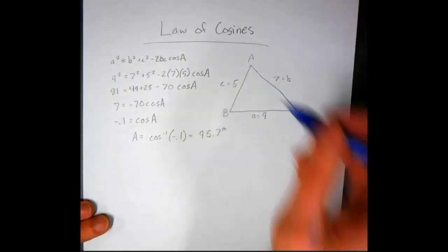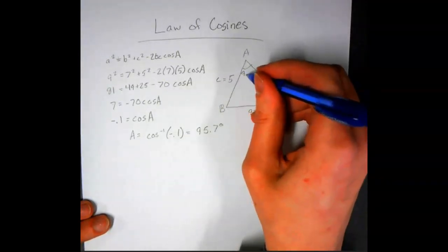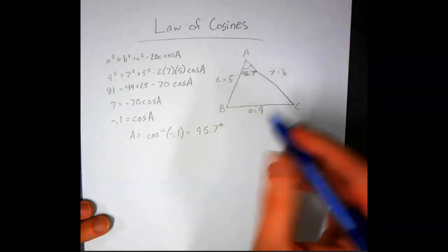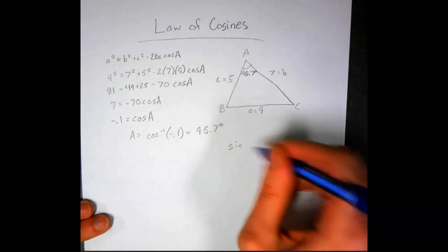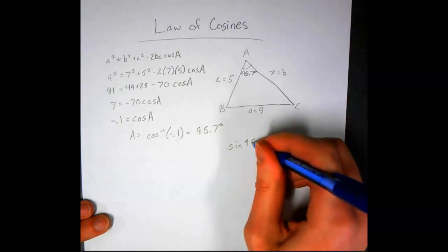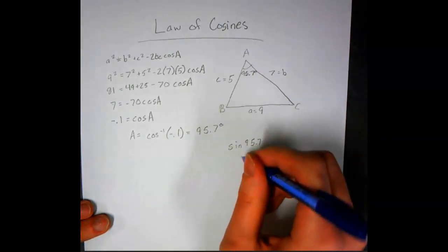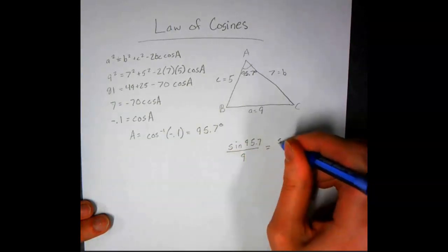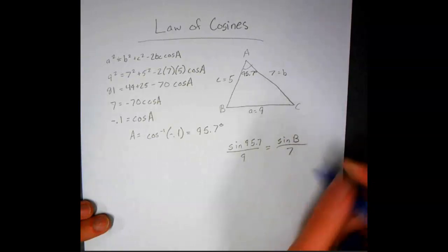Now, we do have a matching side angle, so we can switch back over to using law of sines to solve the rest. We'll say sine 95.7 over 9 equals sine b over 7.